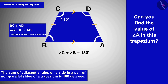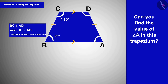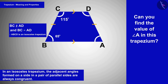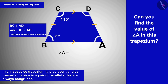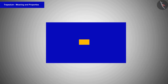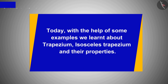We have been given the value of angle C as 115 degrees, so the value of angle B will be 180 degrees minus 115 degrees, which is 65 degrees. In an isosceles trapezium, the adjacent angles formed on a parallel side are always congruent, so angle A and angle B are equal. Therefore angle A is also 65 degrees. Today, with the help of examples, we understood the properties of trapezium and isosceles trapezium.